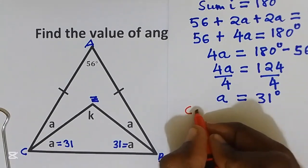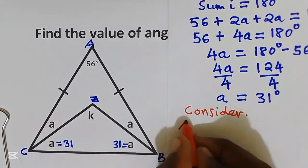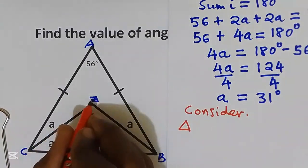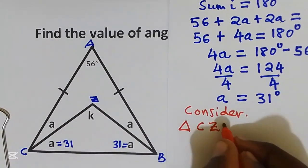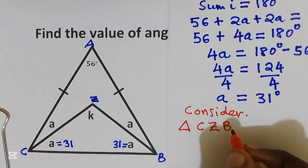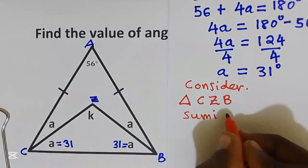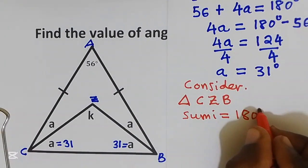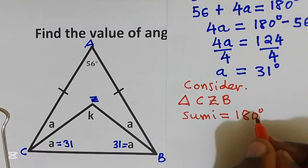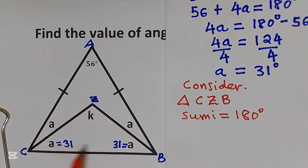We are going to use triangle CZB. We know the sum of interior angles of any triangle is equal to 180 degrees. That means 31 plus 31 plus k equals 180.